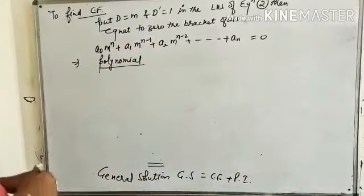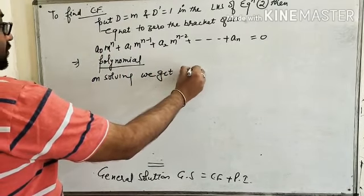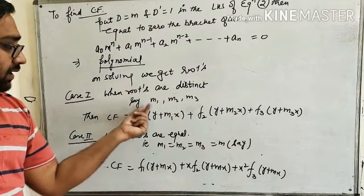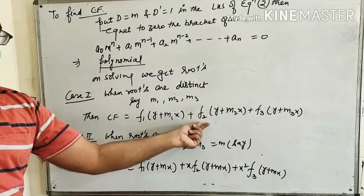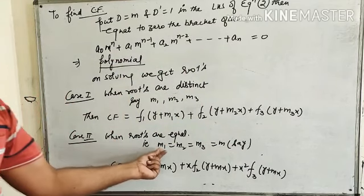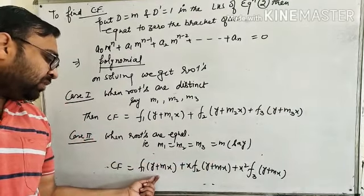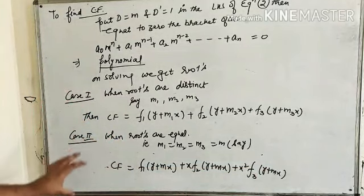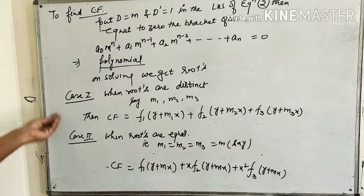There are two cases. Case 1: when roots are distinct — say m₁, m₂, and m₃ — then CF = f₁(y + m₁x) + f₂(y + m₂x) + f₃(y + m₃x). Case 2: when roots are equal — that is, m₁ = m₂ = m₃ = m — then CF = f₁(y + mx) + x·f₂(y + mx) + x²·f₃(y + mx). These are the only two cases to find CF.